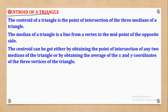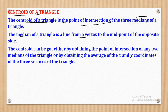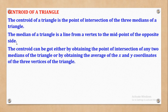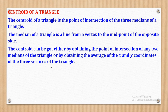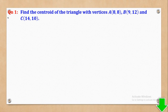Now we go to centroid of a triangle. The centroid is the point of intersection of the three medians of a triangle. A median is the line from a vertex to the midpoint of the opposite side. The centroid can be found in two ways: by obtaining the intersection of any two medians, or by getting the average of the x-coordinates and y-coordinates of the three vertices.